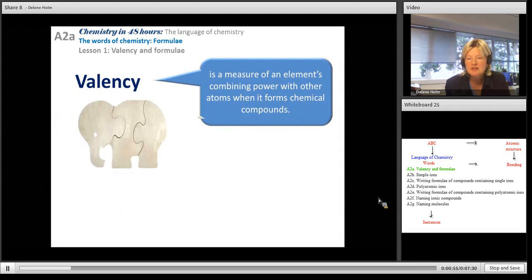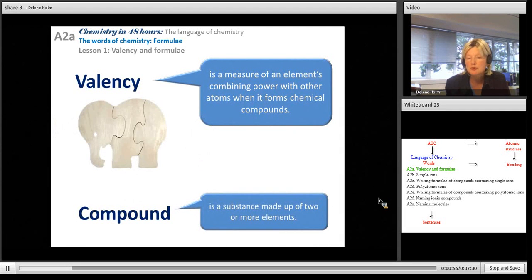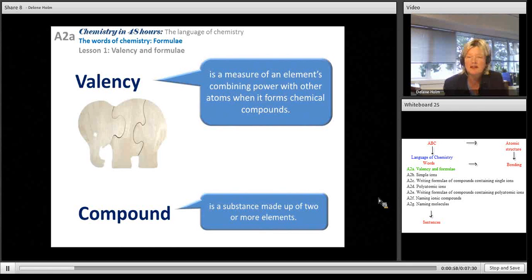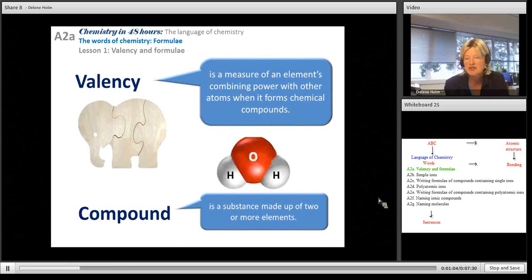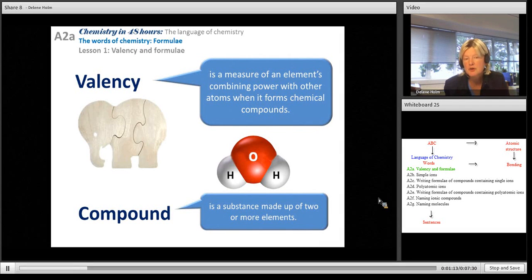When we have a compound, a compound is made up of two or more elements and they always combine in a particular ratio depending on the valency of the elements. Thinking of water, oxygen is like the middle piece so it has a valency of 2, and hydrogen is like the front and rear end which only has a valency of 1. So you'll always have 2 hydrogens to every 1 oxygen.